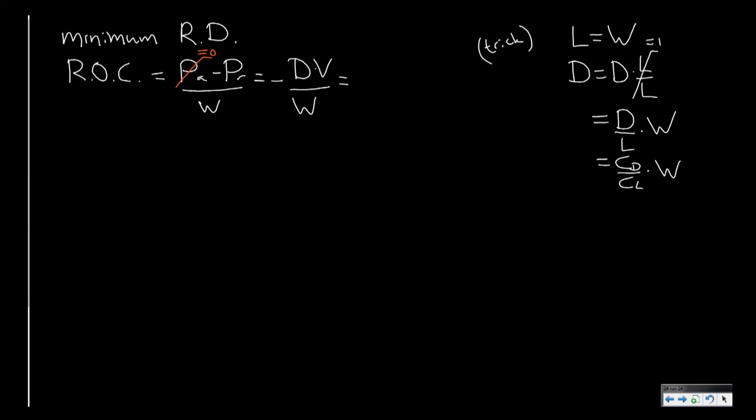So this means that I can also write the rate of climb equation as minus CD over CL times the weight, and that multiplied with the airspeed.